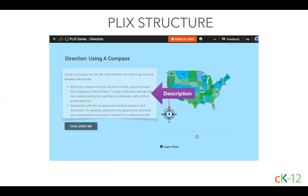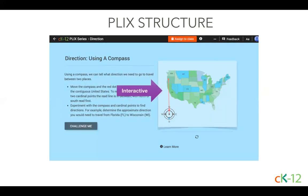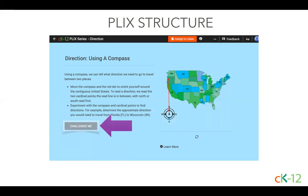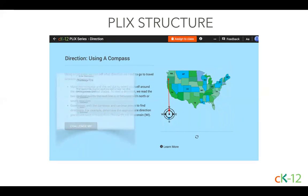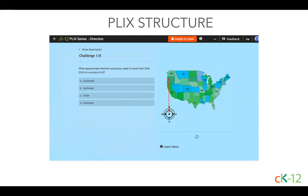After you've opened up a Plix, the first thing you do is read the description on the left. The description explains what the interactive is about and provides directions on how to interact with it. Next, use the interactive by following the prompt in the instructions. If you need to start over, there's a refresh button at the bottom you can use. After you've used the interactive, click the challenge button below the description. This opens up the challenge questions. The questions often build upon one another to help students reach a deeper understanding of a concept. The final question is a discussion question that you can use for a class conversation.